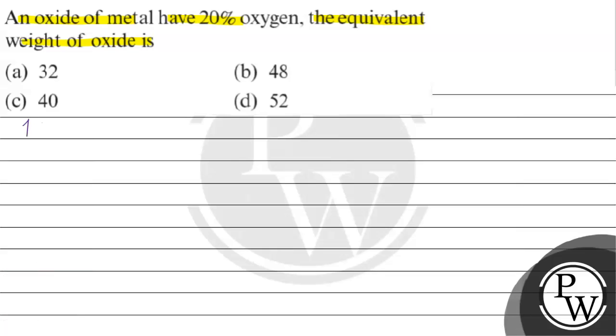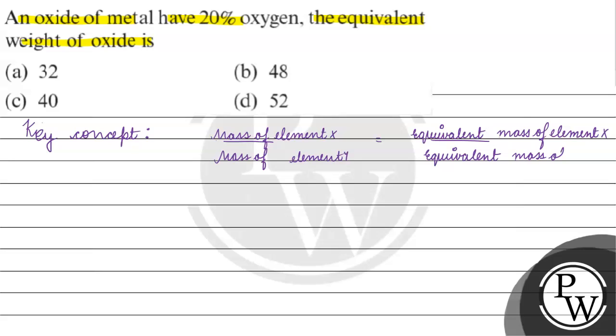Right, the key concept for this question is: mass of element X by mass of element Y is basically equal to equivalent mass of element X by the equivalent mass of element Y. Okay.